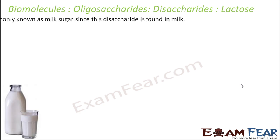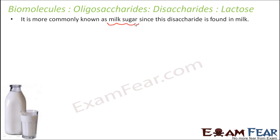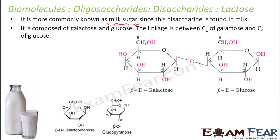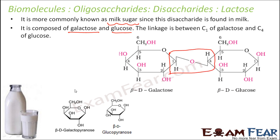Lactose is commonly known as milk sugar. The prefix 'lact' is related to milk — for example, lactogen, lactation period, and lactic acid are all related to milk. Lactose is composed of galactose and glucose, and here you can see the linkage between C1 and C4 carbon atoms forming the glycosidic bond. This bond is formed by the loss of one water molecule.